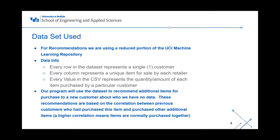So the dataset used. For recommendations, we're using a reduced portion of the UCI machine learning repository, mostly because otherwise it would be a fair bit to go through. For every row in the dataset, it represents a single customer — customers don't necessarily have to be unique. Every column represents a unique item for sale by each retailer, and every value where a customer crosses with an item represents the quantity of each item purchased by that particular customer.